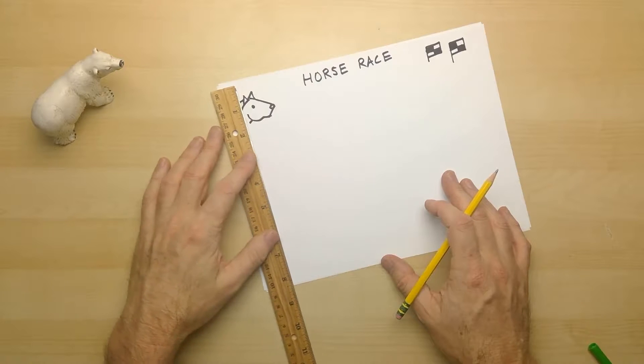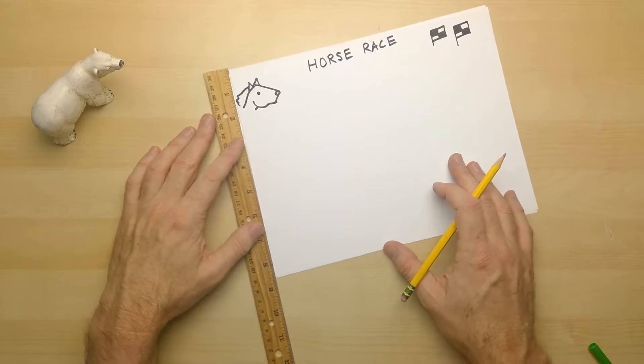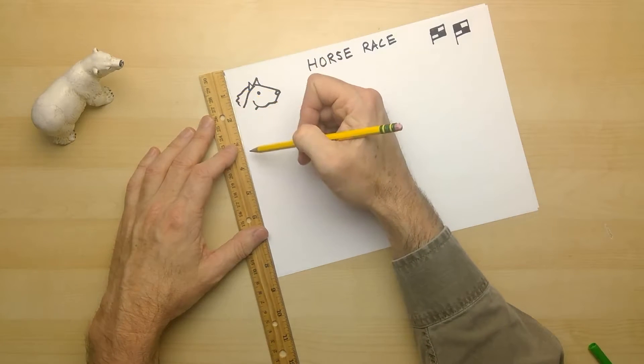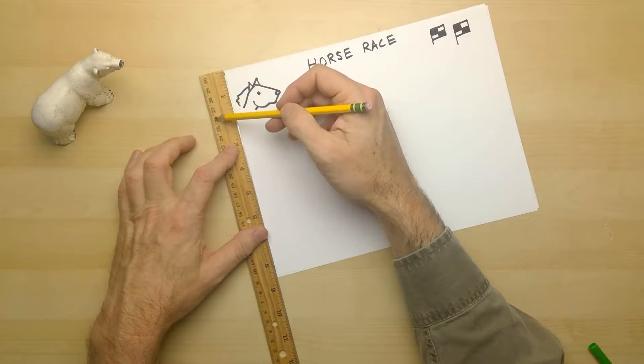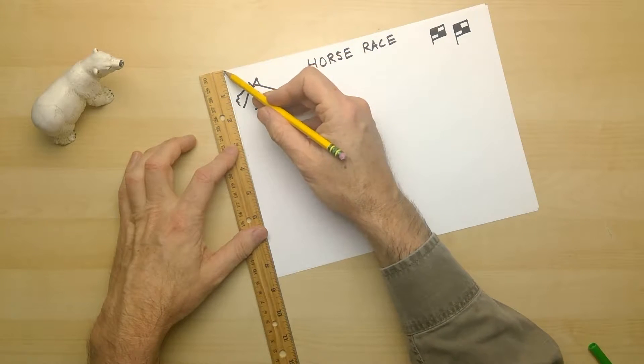This will help make the course for the race. So using the ruler, let's mark down one side every inch or so. And if you're using centimeters, use every other one like every two centimeters. But for this one, every inch.